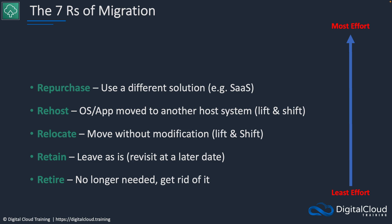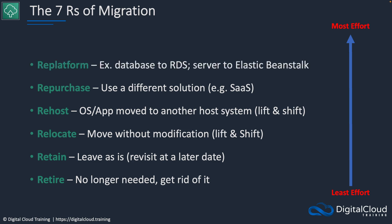On the right-hand side we're going from least effort to most effort. Retiring is pretty straightforward — you're just shutting it off. Retain usually means you don't have to do much at all either, so those are right at the bottom. As we get higher up, things become more complex and require more effort in terms of planning and migration. Repurchasing doesn't come out at the top, but if you're migrating from an on-premises CRM to something like Salesforce and the formats are very different, that could also be a very complex project.